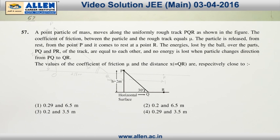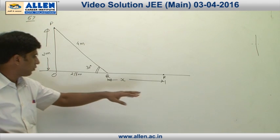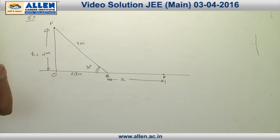In question number 57, we have to find the value of x and the value of coefficient of friction, and it is given that the energy loss from P to Q and from Q to R are same in value.